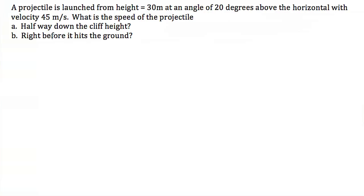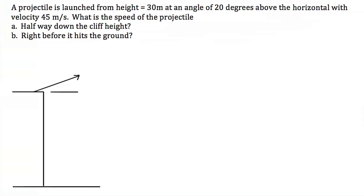The first step to solving a physics problem is always to draw a picture. Here's my cliff — it's 30 meters tall. Here's my velocity vector for the initial velocity of my projectile: it's 45 meters per second, launching at 20 degrees above the horizontal, so this angle is 20 degrees. And my projectile is going to travel in a parabolic arc like that.